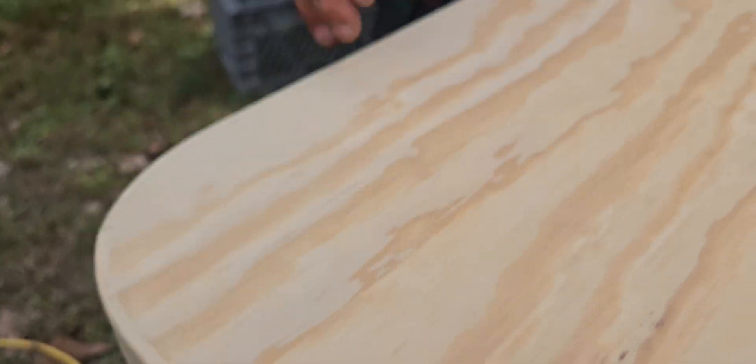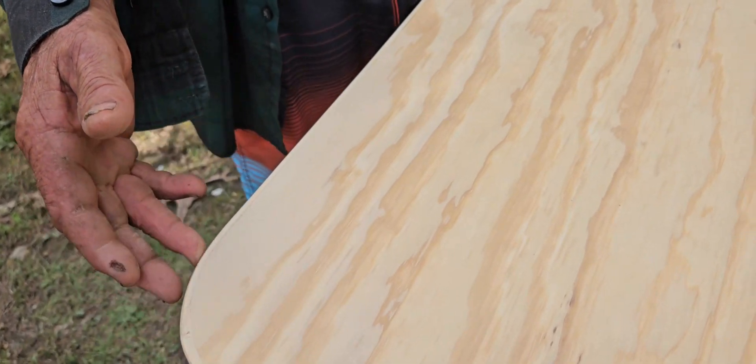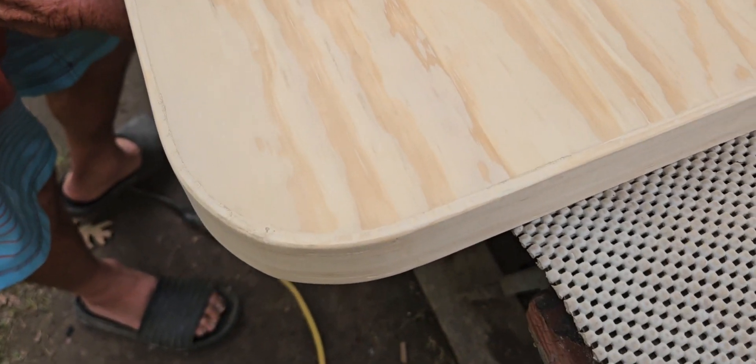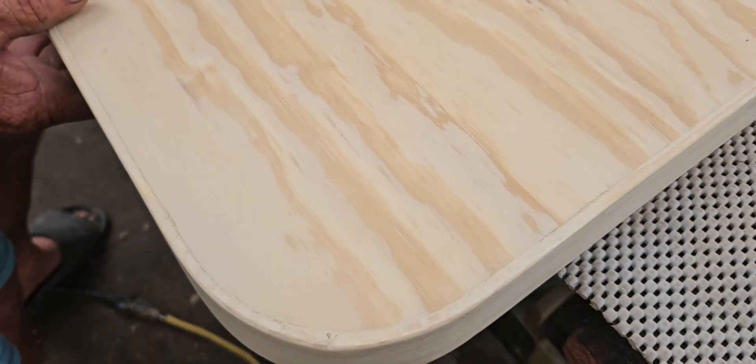And then I took and made it where I could bend these corners. Now, if you want to know how I bent these corners and made them where they bend around this plywood like this, just drop in the comments and I'll tell you how I made it happen.